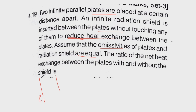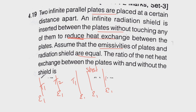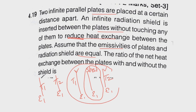Initially there are two plates separated by some distance, with the same emissivity epsilon for both plates, exchanging heat at temperatures T1 and T2. Now between the same two plates with the same emissivities, we are inserting a radiation shield whose emissivity is also epsilon. The temperature of the first and second plates remain the same. We have to find the ratio of net heat exchange with and without the shield, that is Q2 by Q1.